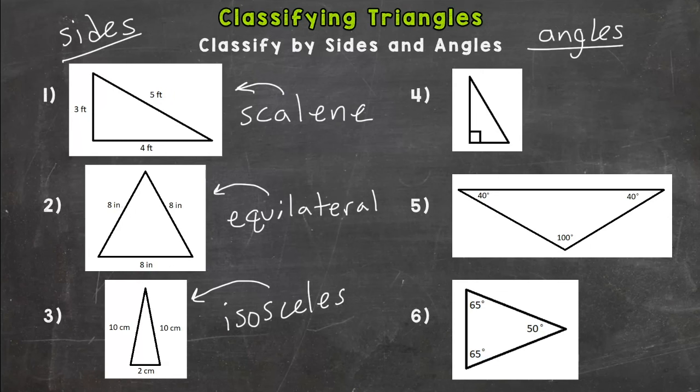So again, number one scalene - none of the sides the same. Number two, all of the sides the same - equilateral. And then number three, two of the sides - isosceles.